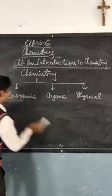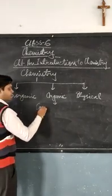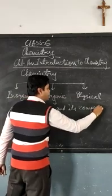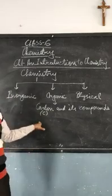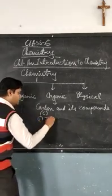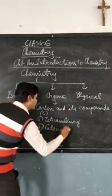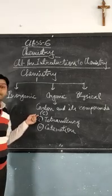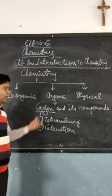The second branch is about carbon and its compounds. All the substances which are made up of carbon, which contain a carbon atom — carbon is having two special properties: first one is tetravalency and second one is catenation. Because of these two properties there are a large number of carbon compounds — more than twelve thousand five hundred compounds of carbon only. That's why a separate branch of chemistry is made only for the study of carbon and its compounds.